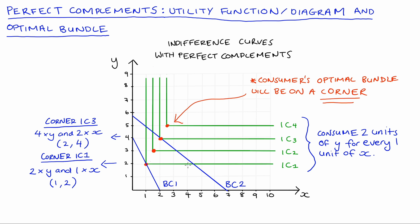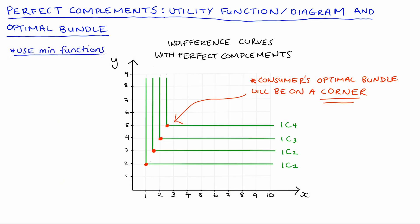First though algebraically we're going to describe these sorts of preferences using what is called the min function. And so the utility function U equals the minimum of (x, half y) is actually the function that describes these curves that I've drawn here. Now with our min function, the function itself just means the level of utility U that our consumer gets is equal to the smallest of the two numbers in the brackets in our function.